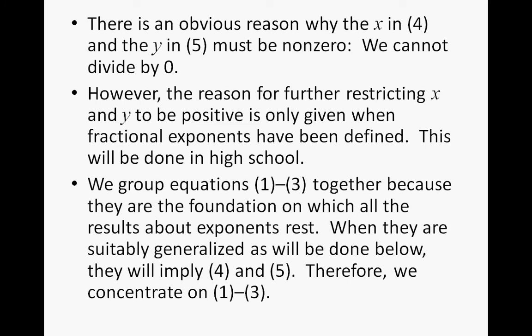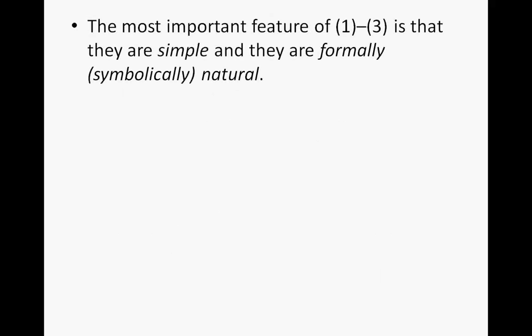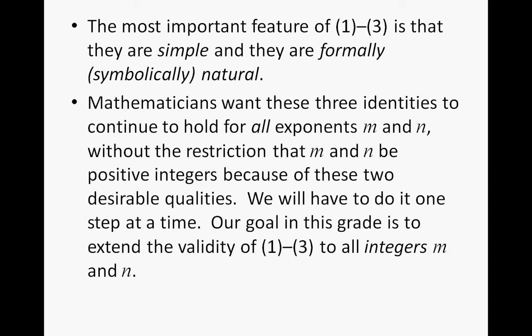We're going to group equations 1 through 3 together because they are the foundation on which all the other results about exponents rest. When they are suitably generalized, they will imply the other two equations 4 and 5. Therefore, we're not going to worry about 4 and 5 right now — we're just going to concentrate on 1 through 3. The most important feature of equations 1 through 3 is that they are very simple and symbolically natural. Mathematicians want these three identities to continue to hold for all exponents m and n, not just positive exponents, because they are simple and natural.